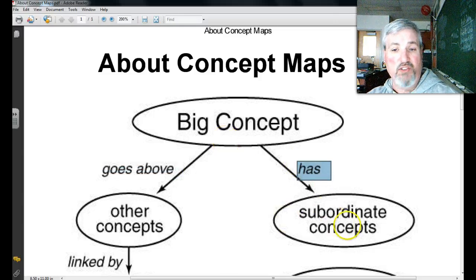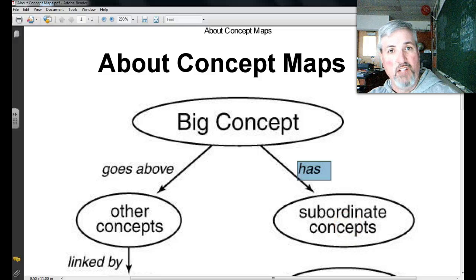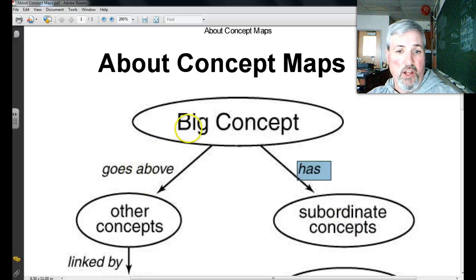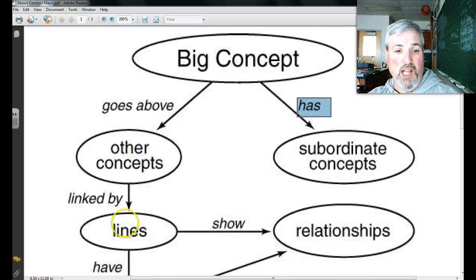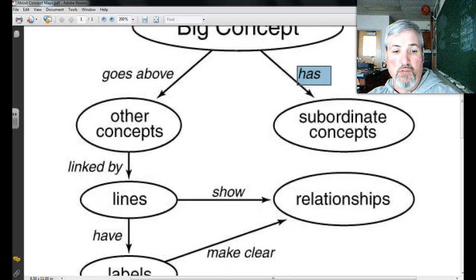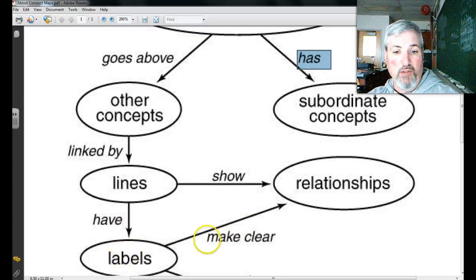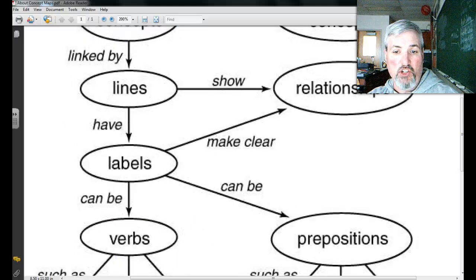Big concept has subordinate concepts, smaller concepts that are related to it. It also goes above the other concepts. These other concepts are linked by lines that show relationships. These lines have labels. They make it clear what the relationships are. They can be verbs, or they can be prepositions, such as change is, have for the verbs, to, by, and with for the preposition.